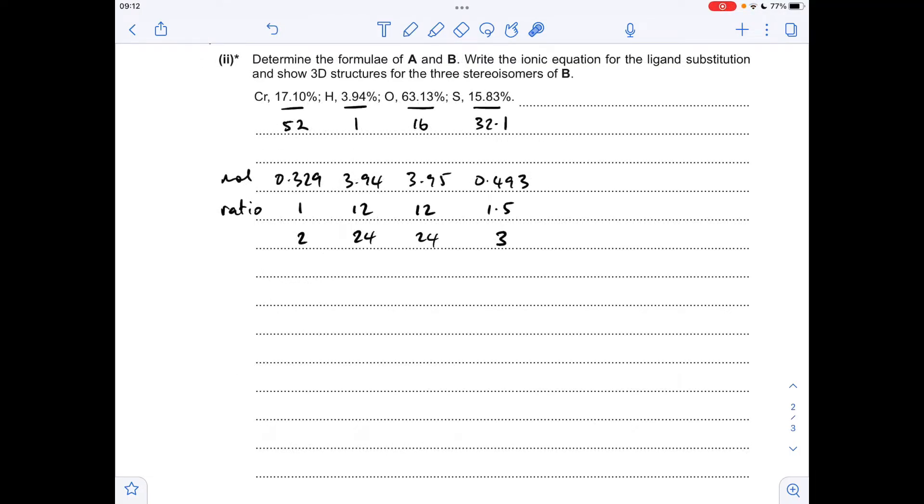So moving on to the next part, we've got to identify A and B. First thing I've done is worked out the empirical formula for the complex. That's just dividing by the MR of the atoms, we get the moles, divide by the smallest, which is obviously that one. We get this ratio here, but because we've got this 1.5, we need to double it out, so it's a 2 to 24 to 24 to 3 ratio.